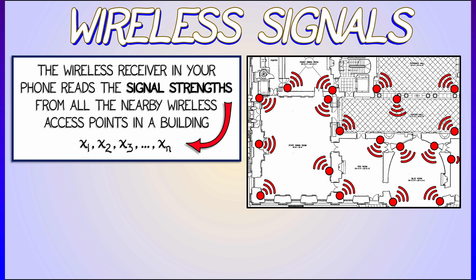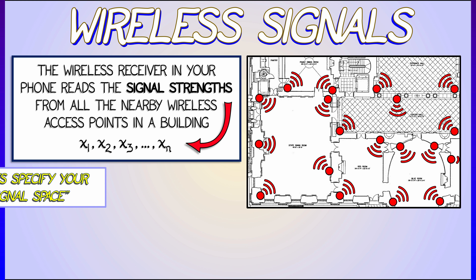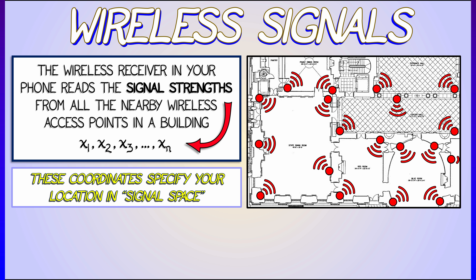You're registering signal strengths X1, X2, X3, all the way up through Xn to those different access points. Now, many of those signal strengths might be zero, but at any given time there may be several that are non-zero. All of these signal strengths together specify your location — your coordinates in a signal space — and often tell you about where you are in physical space as well.